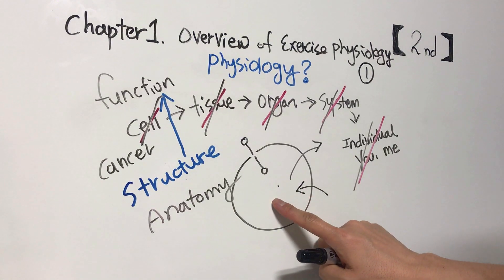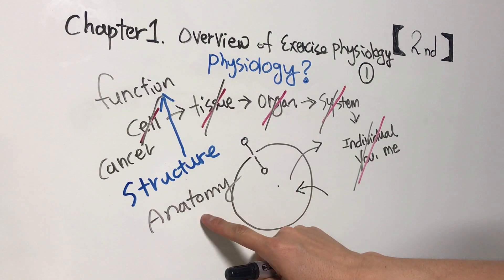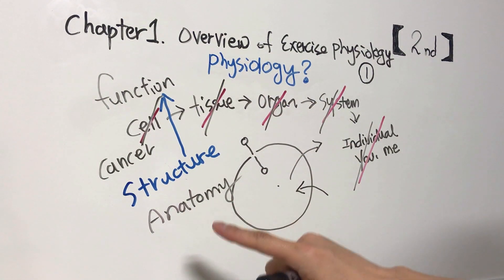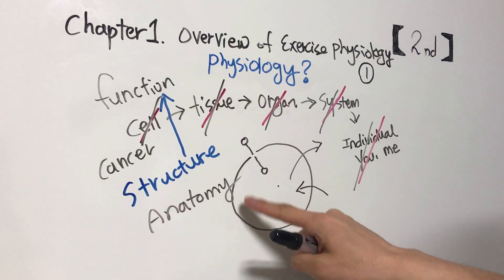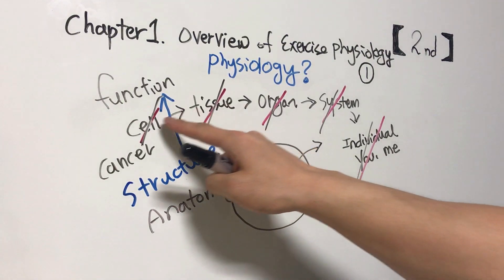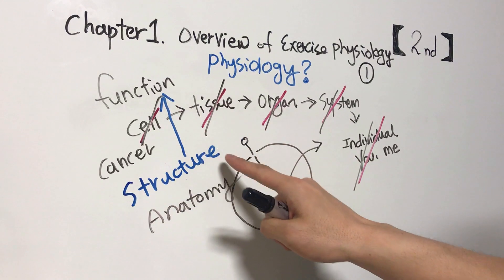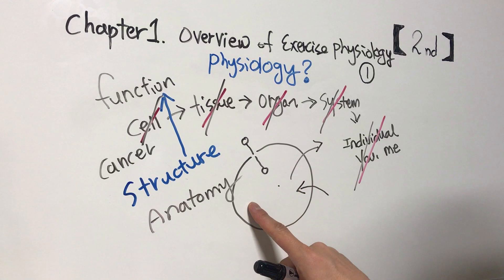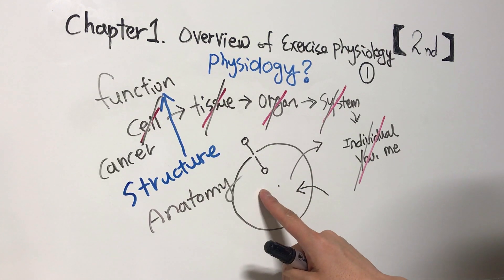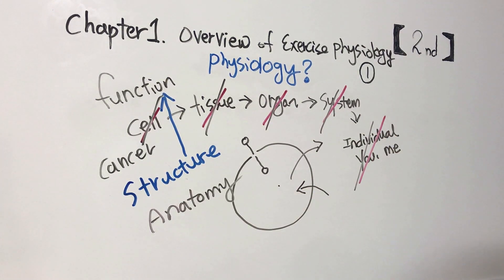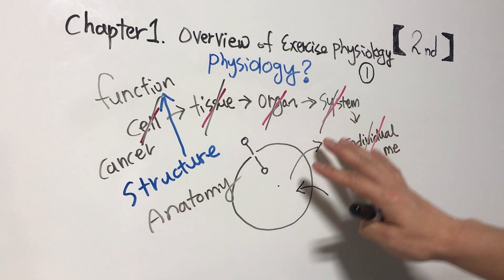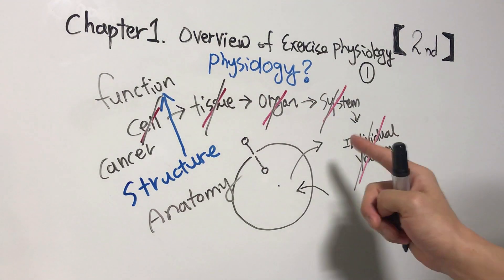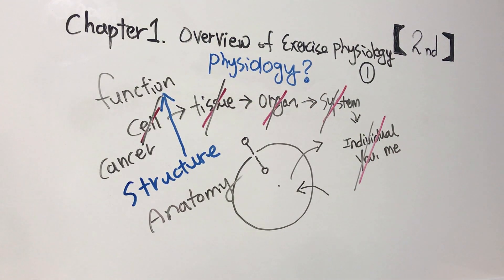Studying normal structure and function is anatomy and physiology. But there are also abnormal structures and functions - this is the field of clinical science. In general, clinic is a medical facility focused on patient care. Next time, we will study related to exercise physiology. I'm always on your side.